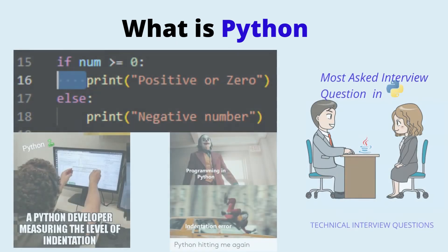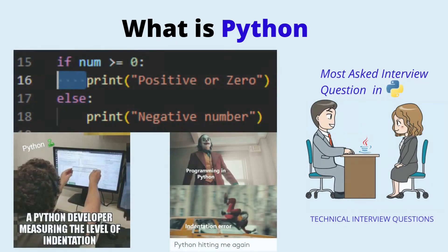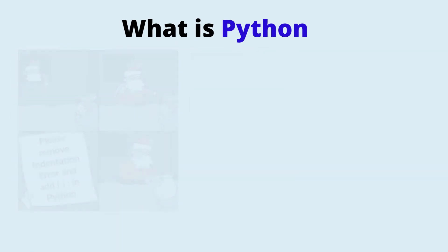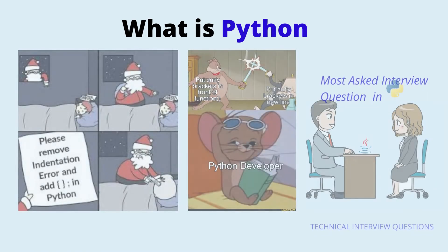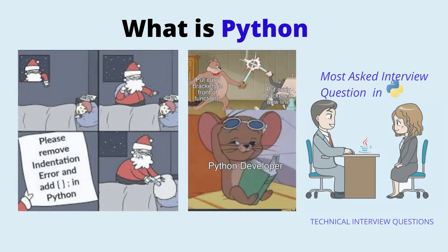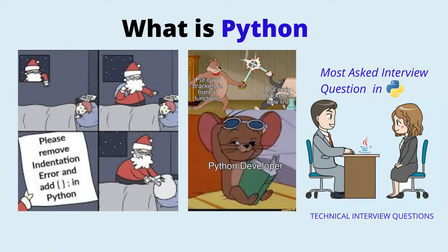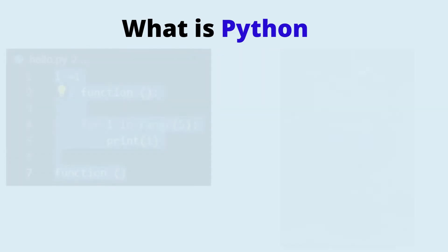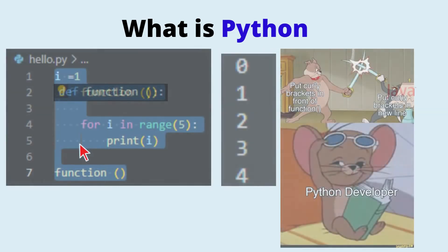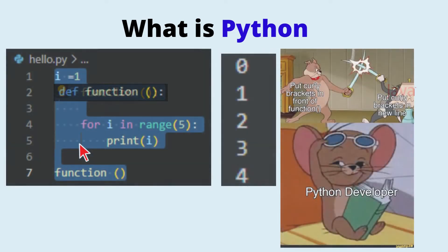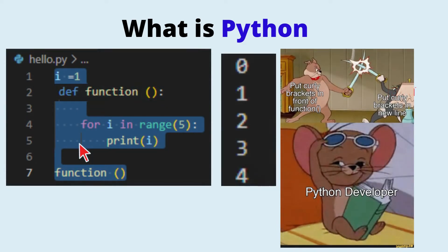Python uses indentation to create a group of statements. Many popular languages such as C and Java use braces or brackets to define a block of code, whereas Python uses indentation. You can define a function with the def keyword, and to define the function body in the next line, you should add four spaces, which acts as indentation. This eliminates the use of curly brackets and semicolons.